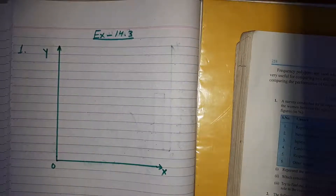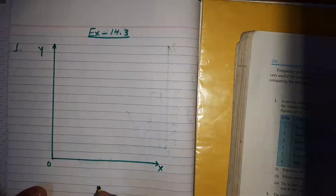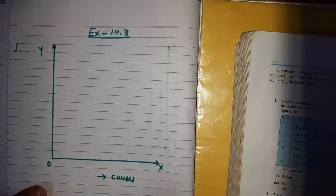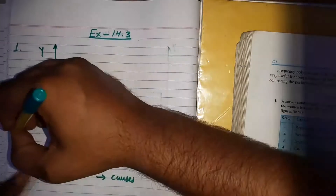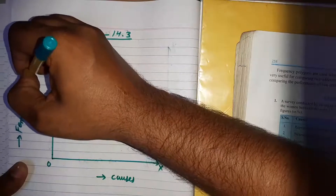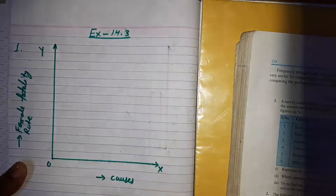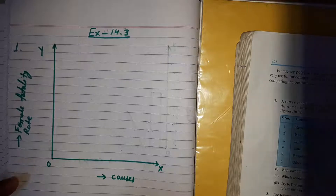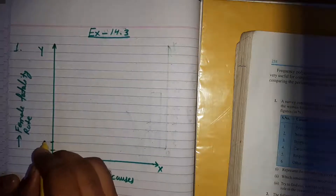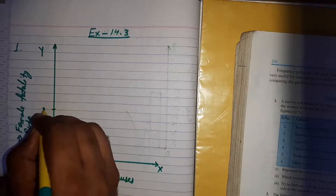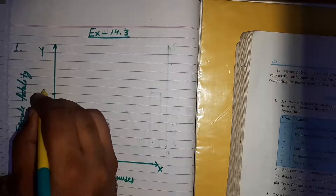On the x-axis, we are taking the causes of illness. On the y-axis, we are taking the female fertility rate. The scale on the y-axis is 1 centimeter equal to 5 units. So the markings are 5, 10, 15, 20, 25, 30, 35, and 40.